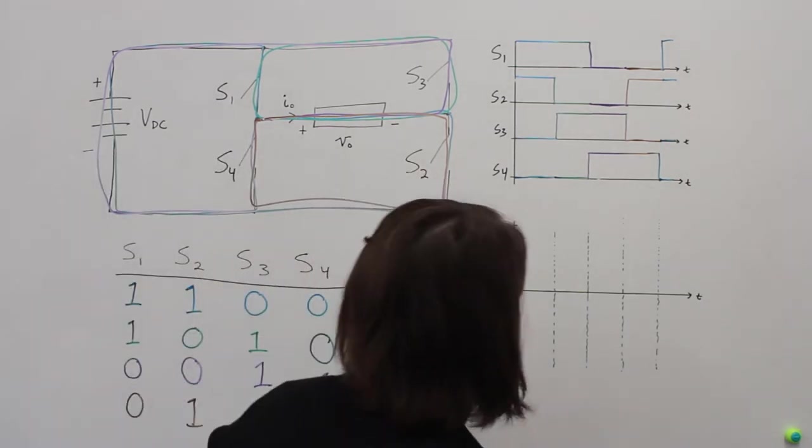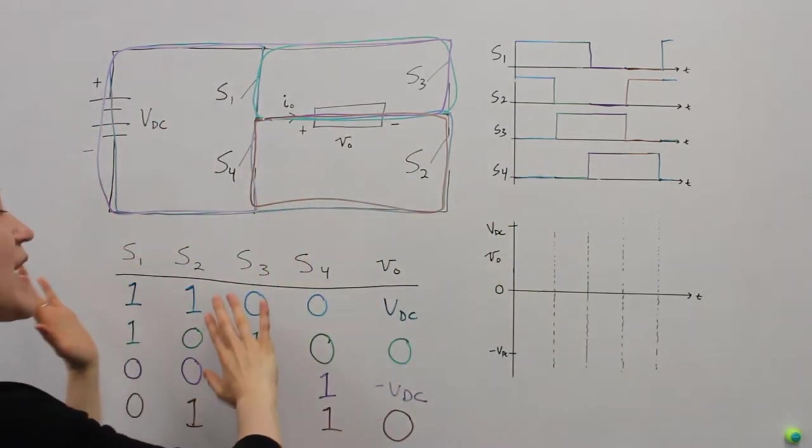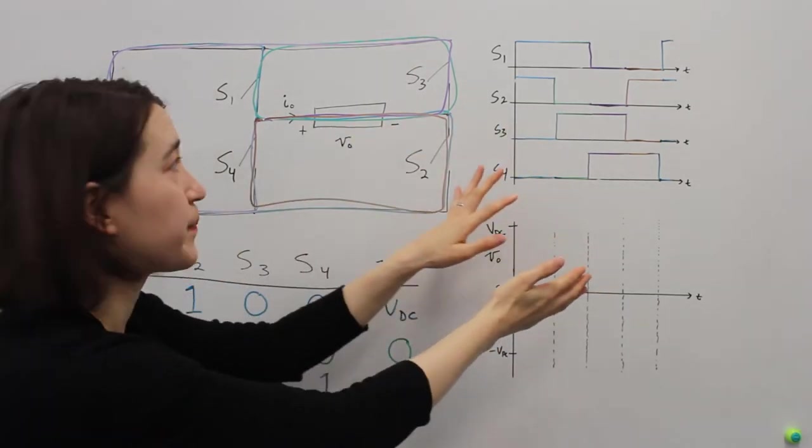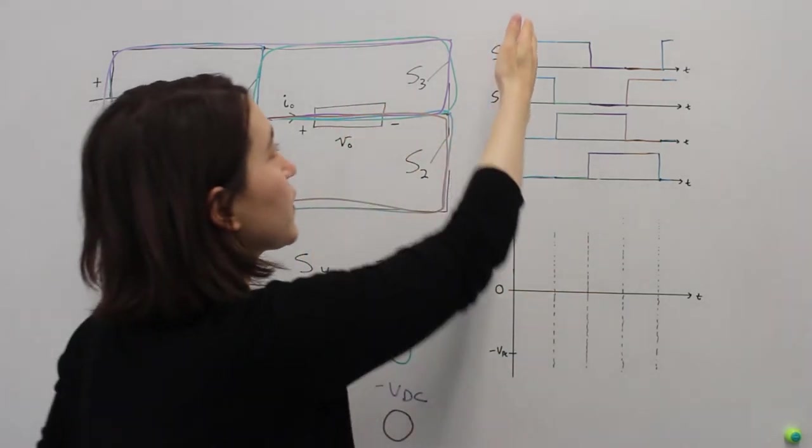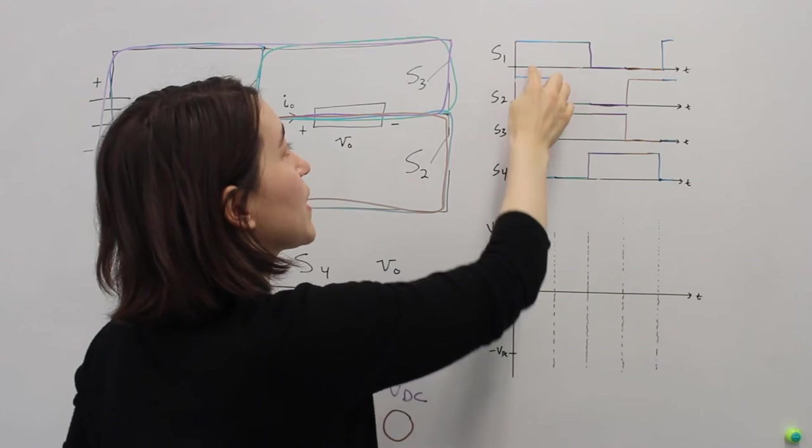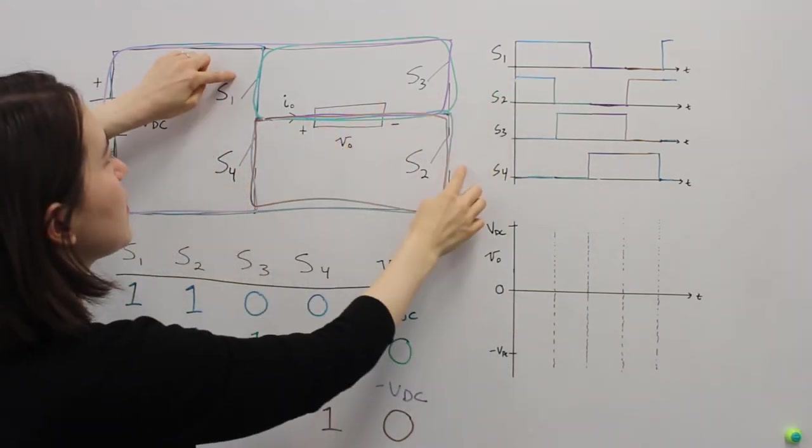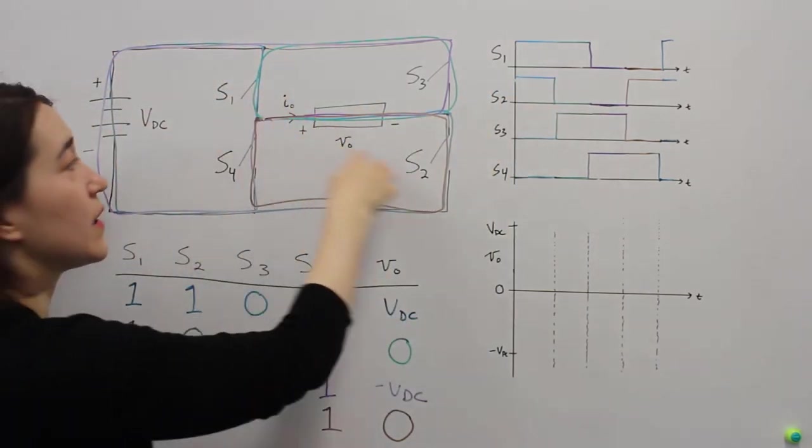So let's draw this out here. So now we are taking this and moving it to the switching diagram. And the first one, again, is S1 and S2 on. And that's these two on, where we get the full VDC over our system.